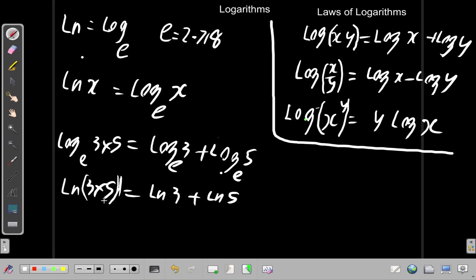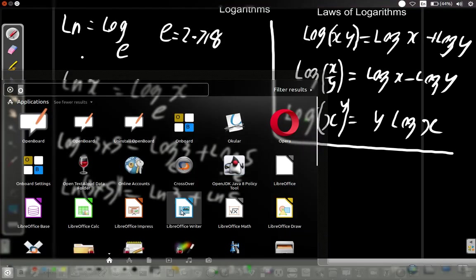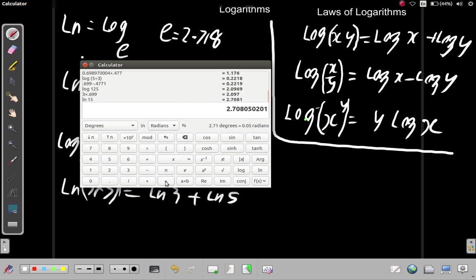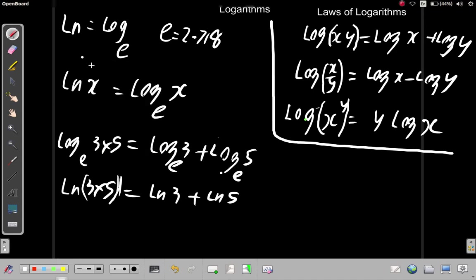3×5 is 15, so let's find ln 15 with our calculator. ln 15 equals 2.708. So that's ln 15, it's 2.708.